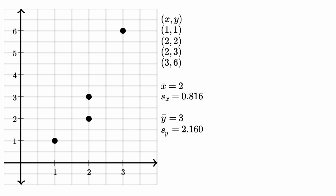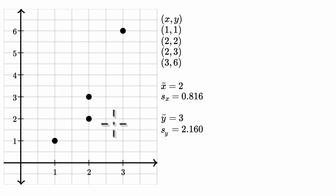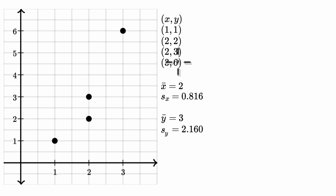What we're going to do in this video is calculate by hand the correlation coefficient for a set of bivariate data. When I say bivariate, it's just a fancy way of saying for each x data point, there is a corresponding y data point. Now before I calculate the correlation coefficient, let's just make sure we understand some of these other statistics that they've given us.